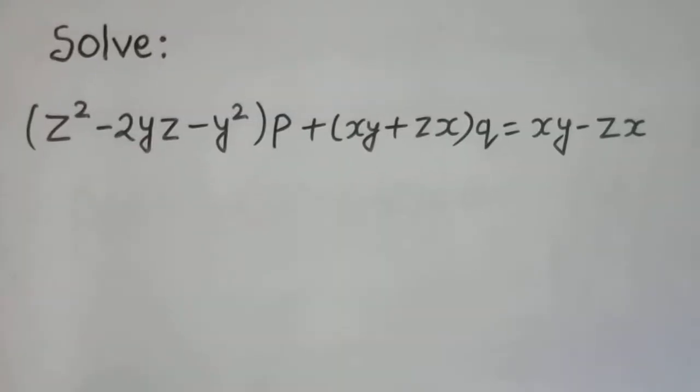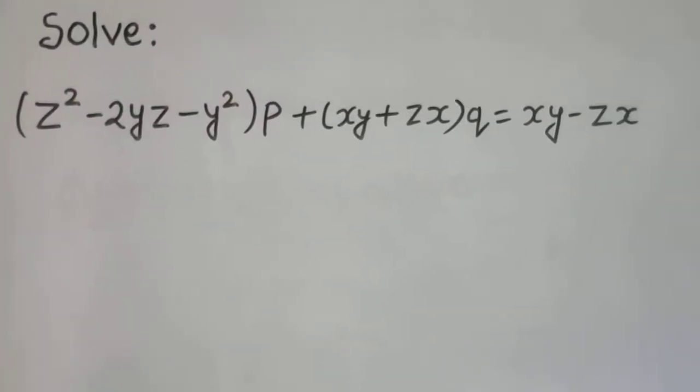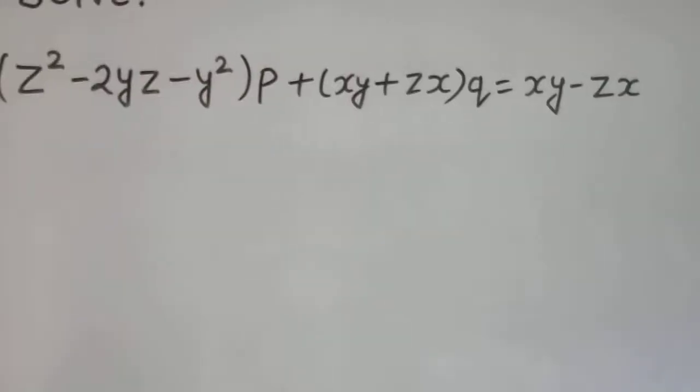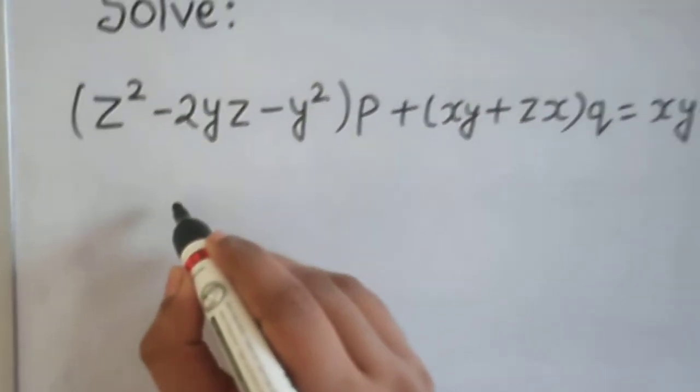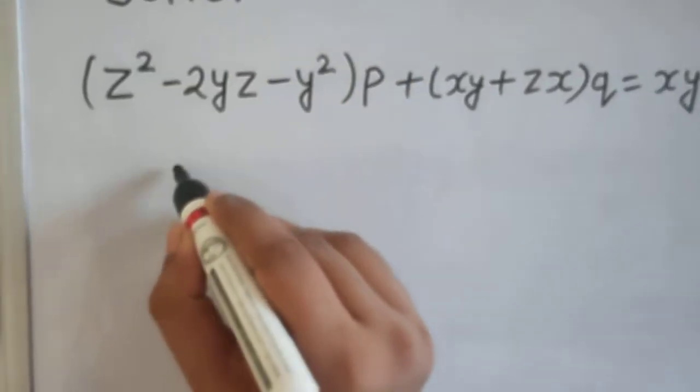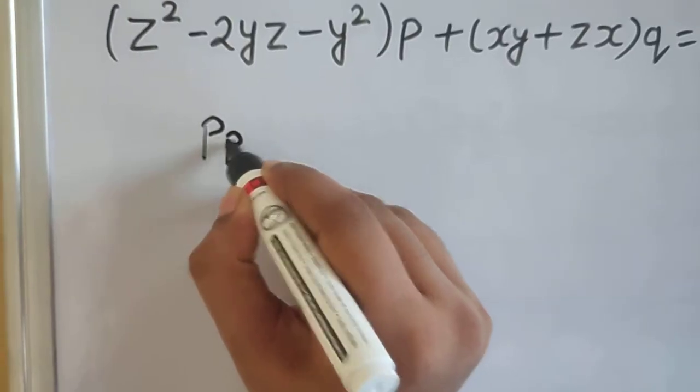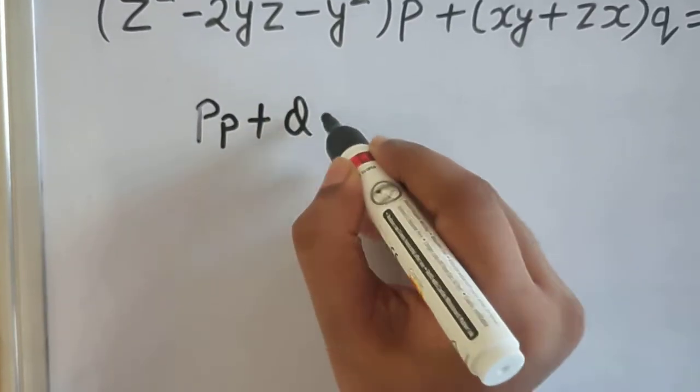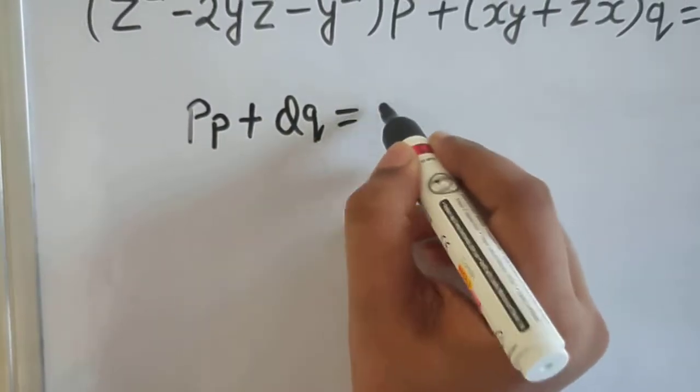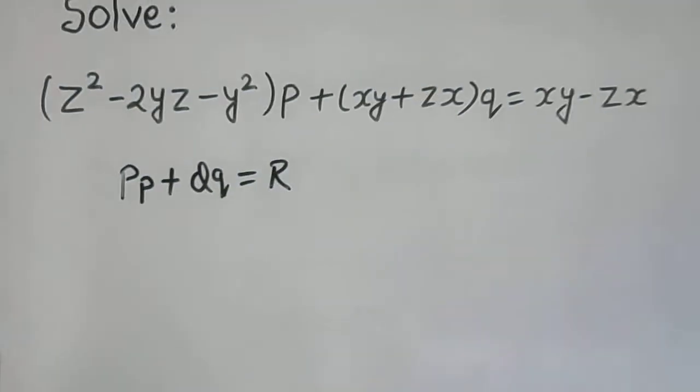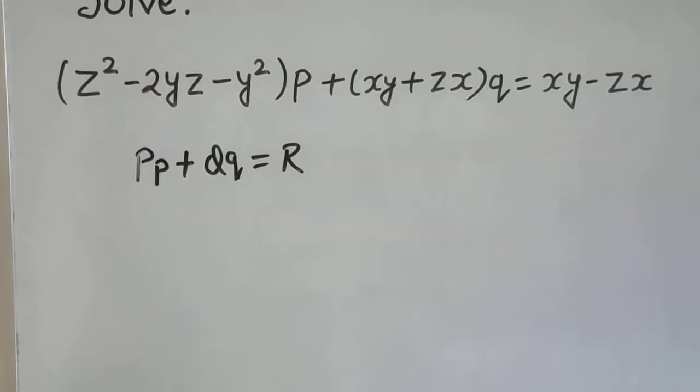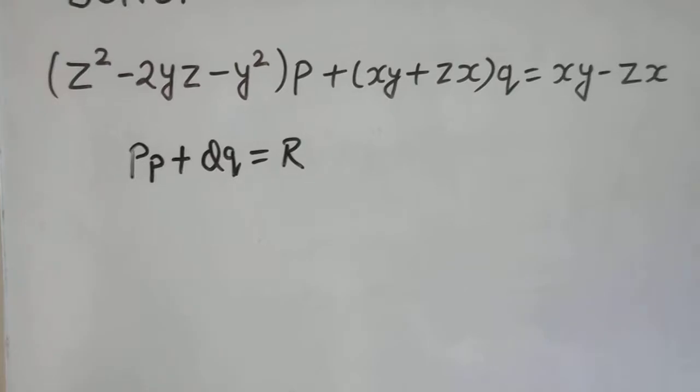We have this question in front of us. So as we know that this question is of the form PP plus QQ equals to R. So you can easily identify what is your P, what is your Q and what is your R from this equation.